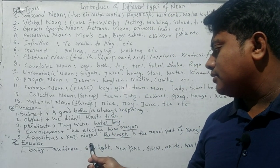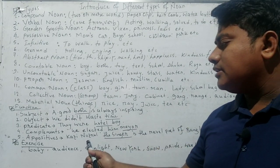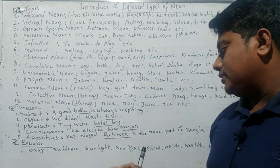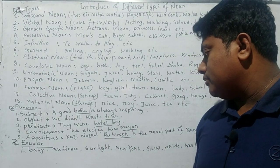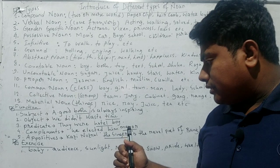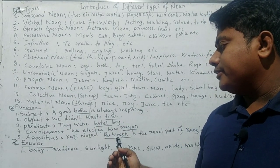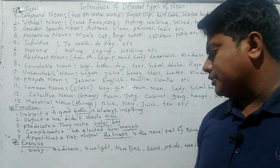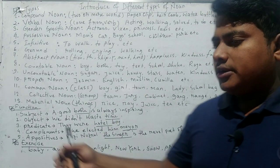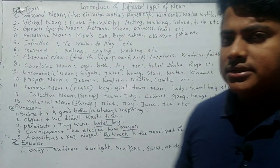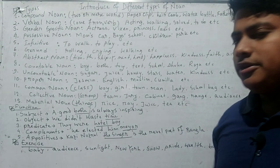Finally, nouns work as appositives. For example: 'Kazi Nazrul Islam, the singer, is the rebel poet of Bangla.' Here 'Kazi Nazrul Islam' is a person, and 'the singer' gives more information about him. So 'the singer' provides extra information — it is an appositive. Now I will give you some exercises. I hope you can identify what type of noun each word is and answer in my comment section.